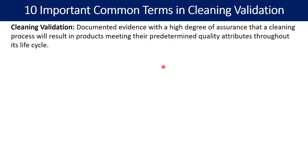This is also called the MACO value or maximum allowable carryover. If for all three subsequent cleaning processes the residue of the previous product is below its MACO, then you can say it meets the predetermined quality attributes — and this must hold throughout the life cycle of the product. This is the meaning of cleaning validation.